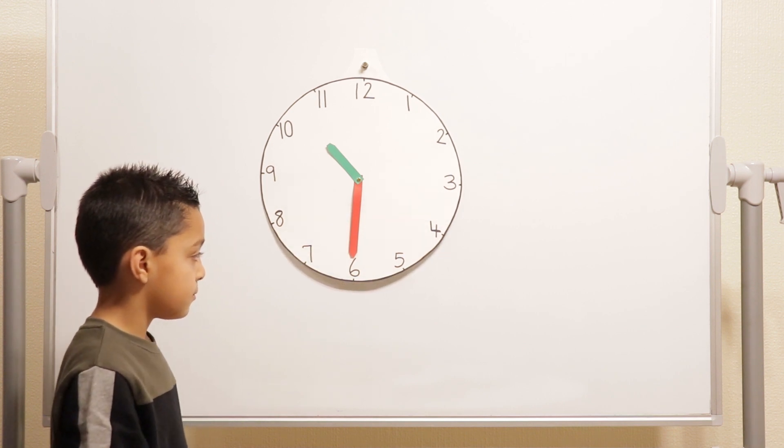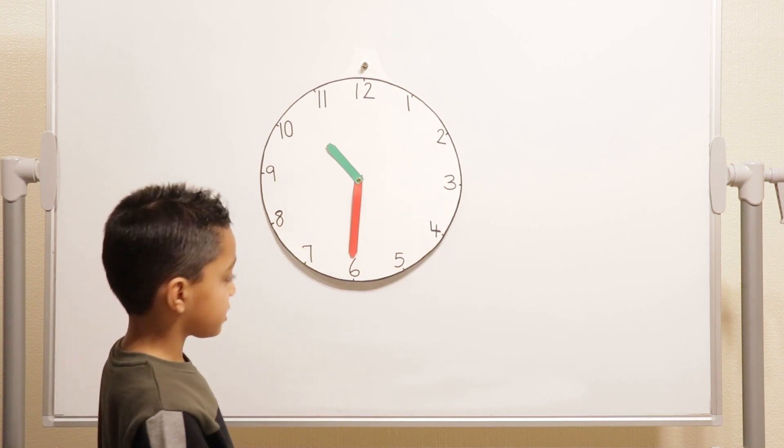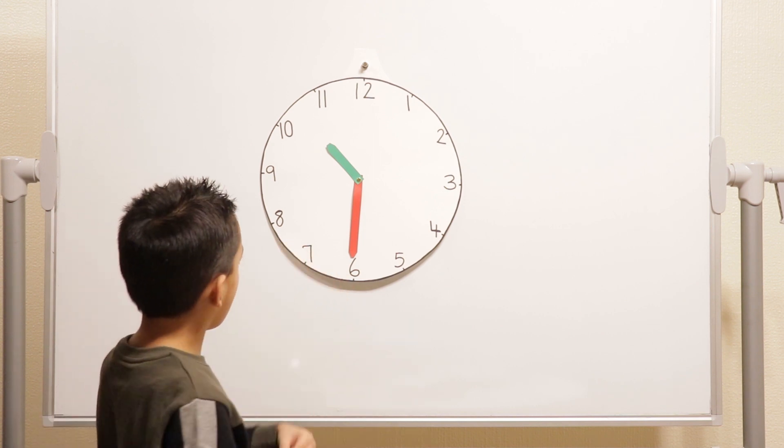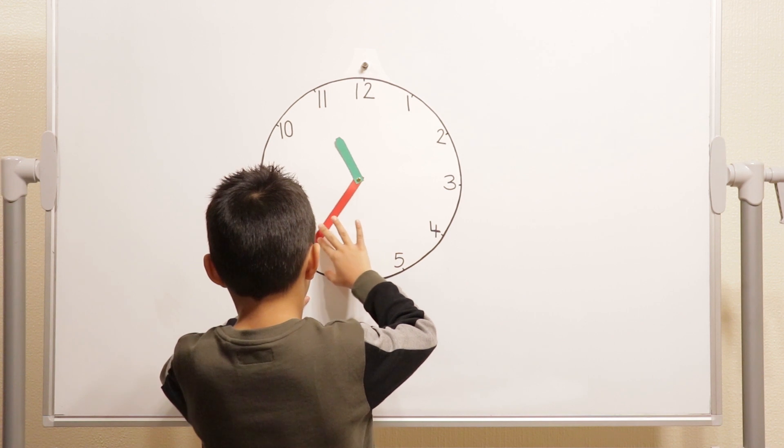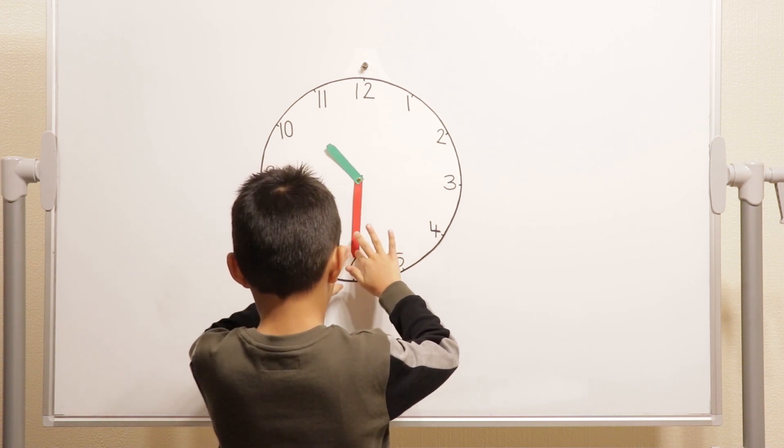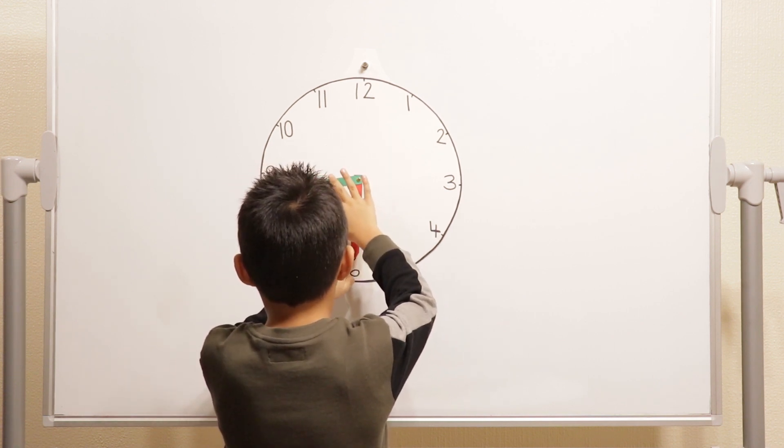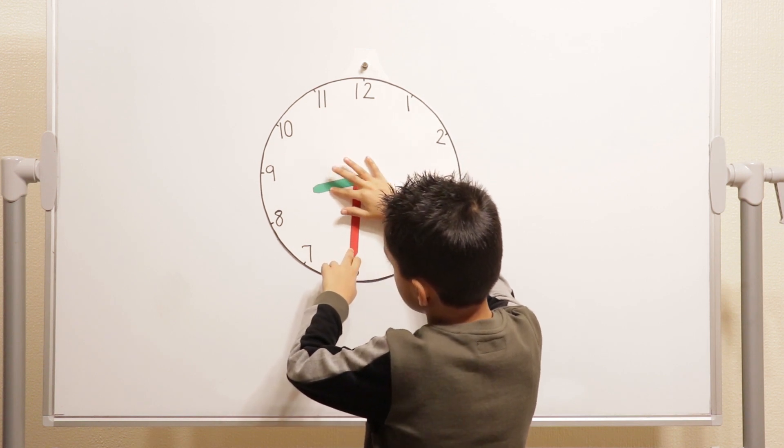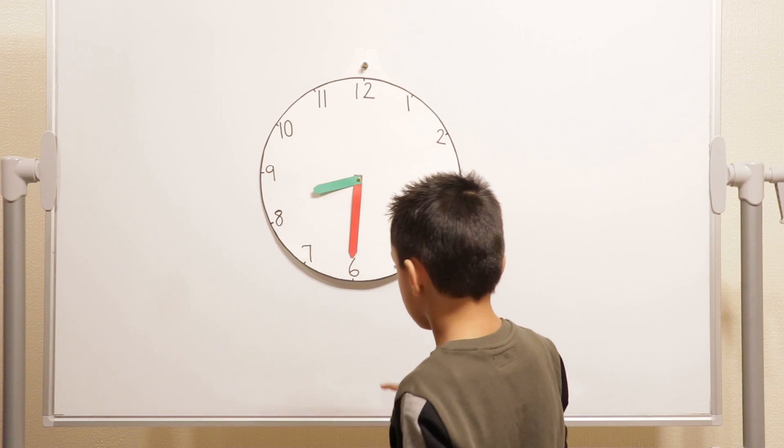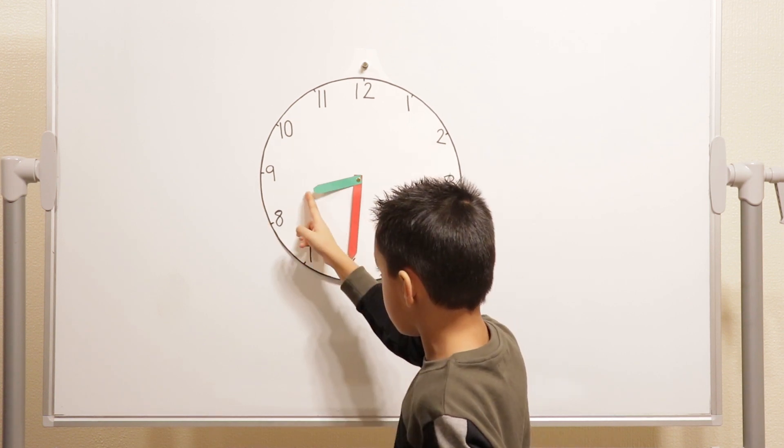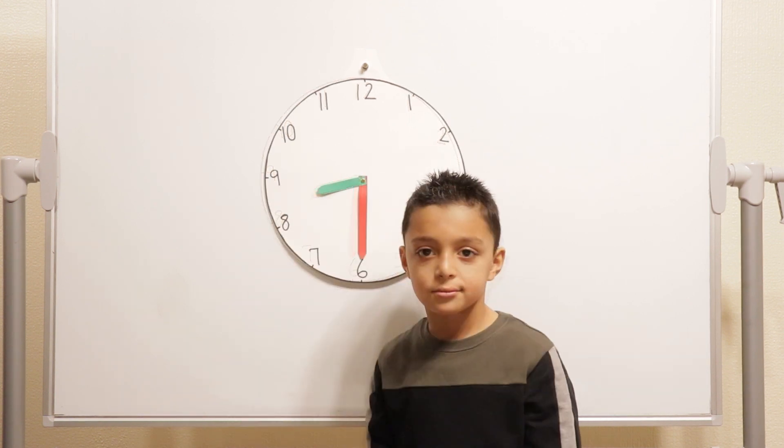Okay, let's do another one on the board. Can you do half past 8? Half past 8. Can we see what you're doing when you're moving them? So, we're doing that. So, this is at the 6 as usual. And then this is at the middle of 8 and 9.